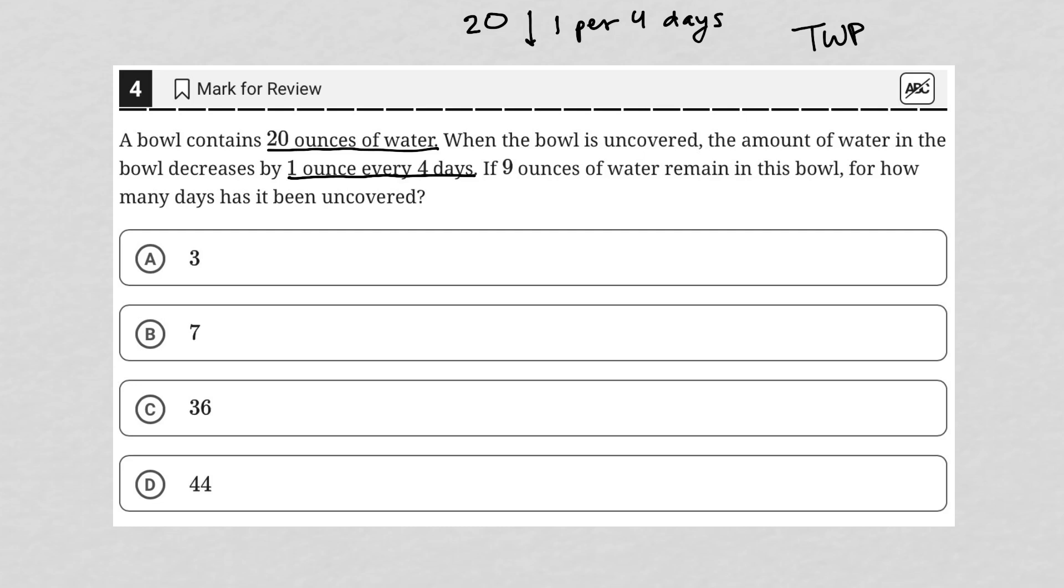The next sentence says, if nine ounces of water remain in this bowl, that means it's lost some, because we started at 20. How much did it lose? Well, that means it's lost 11 ounces.